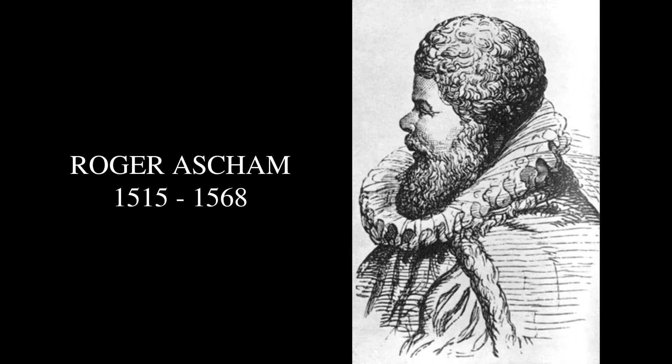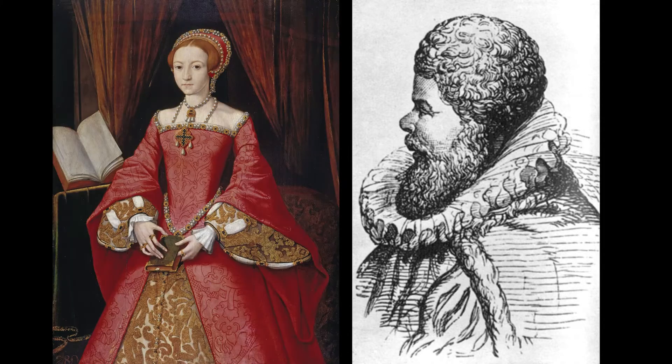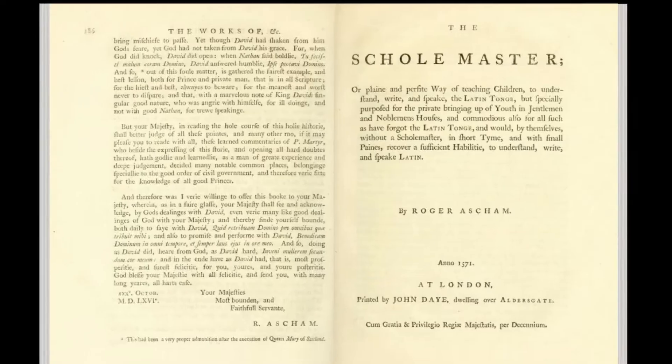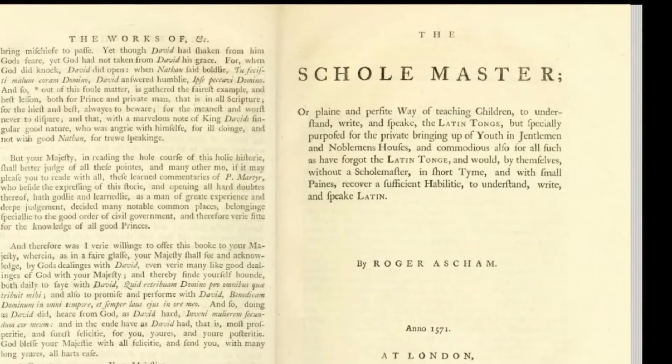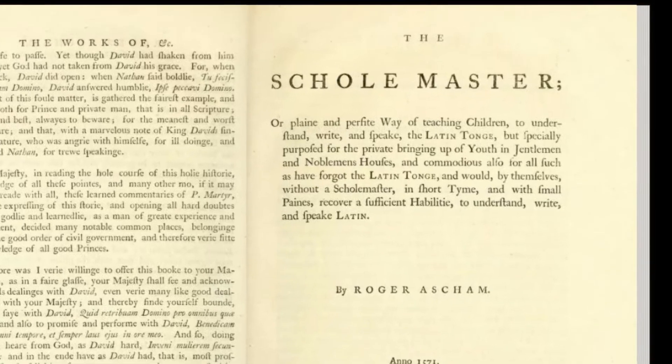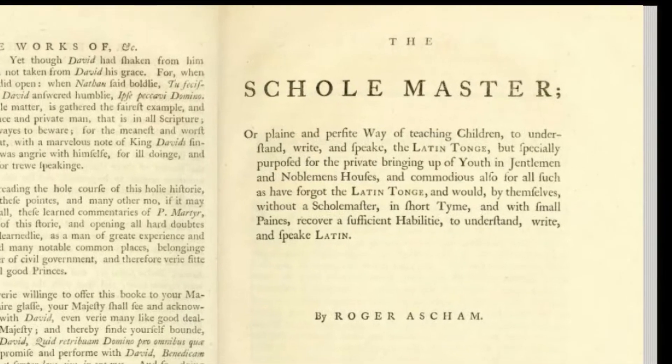Roger Ascombe was an English scholar who had the distinction of being tutor to Elizabeth I. We remember him today for his little book, The Schoolmaster, published in 1570, two years after his death.